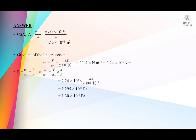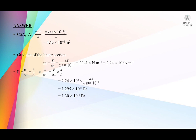The Young's modulus equation is E = σ/ε = (F/A) ÷ (Δx/x), which rearranges to E = (F/Δx) × (x/A). Here F/Δx is the gradient from the graph, and x and A are already known. Substituting: the calculated gradient, original length, and cross-sectional area give E = 1.3 × 10¹¹ Pa.